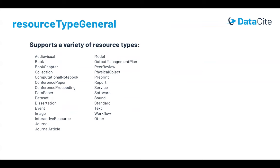The metadata schema is generic and it supports a variety of resource types from all disciplines. Here is the current list of values that can be used for the resource type general attribute, and this is a controlled list. There are a variety of types, including but not limited to datasets. You can use the Datasite Metadata Schema for text-based resources like preprints and conference papers, as well as other types like software and physical objects — you can really represent any type of resource.